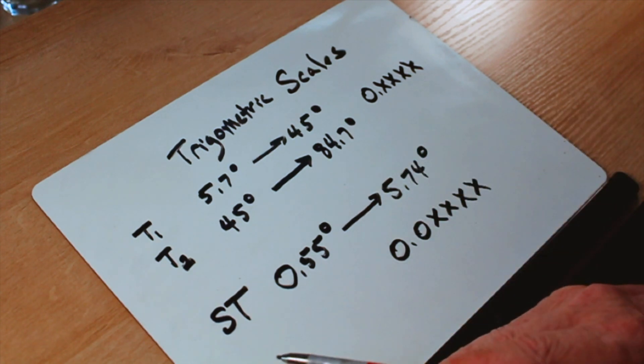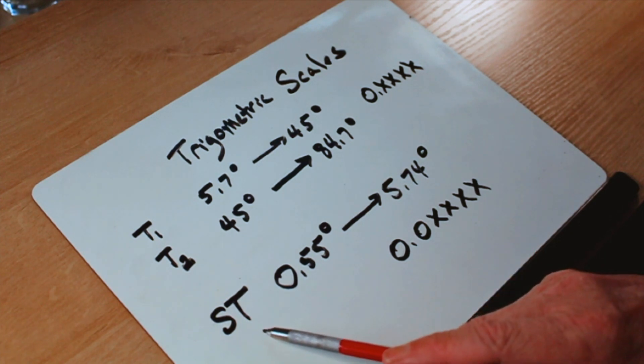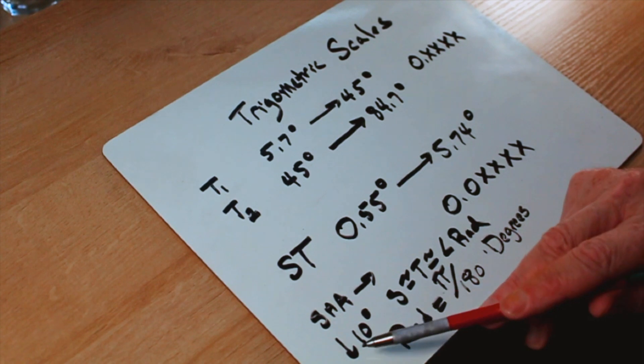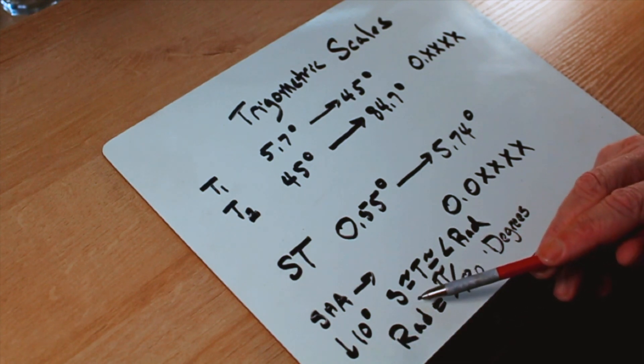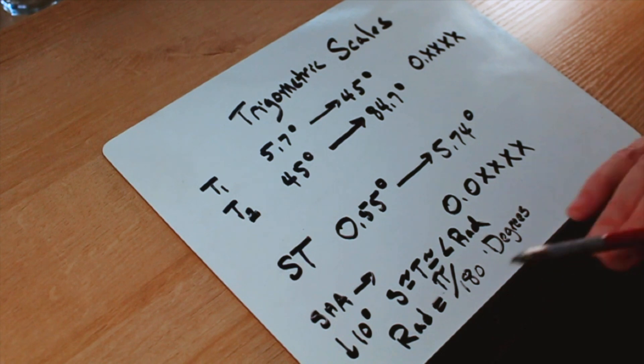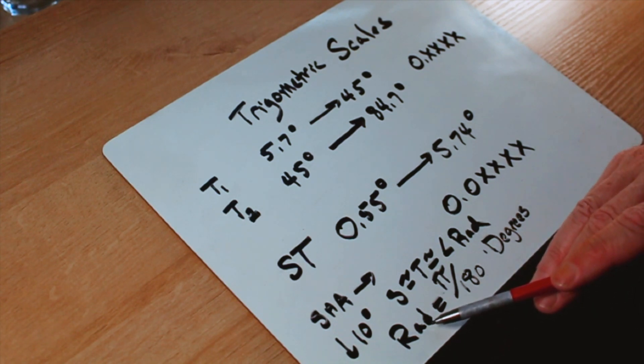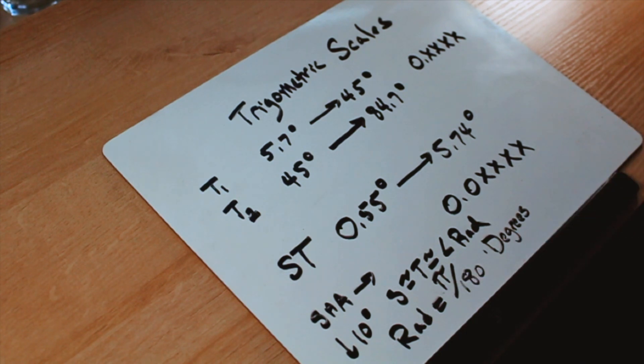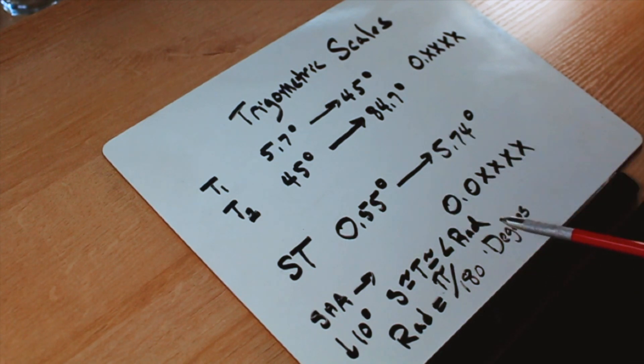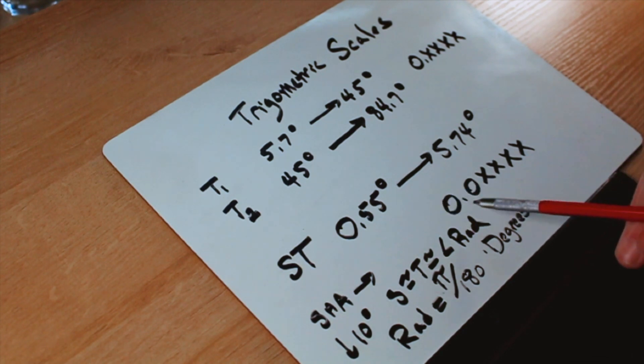Working together with both the S-scale and the T-scale is something called the ST-scale. This is for something called the small angle approximation. The small angle approximation says that when angles get small, and we'll use below 10 degrees, the sine approximates the tangent, which approximates the angle in radians. And an angle in radians, there are two pi radians in 360 degrees. That's how the ST-scale works. And if you read an angle between 0.55 degrees and about 5.74 degrees, you're going to get a sine and a tangent in the form of 0.0 something-something-something-something.